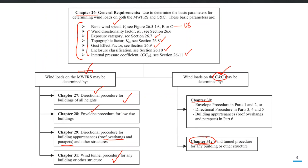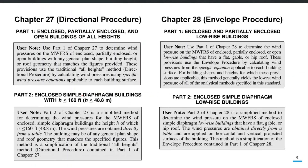We will mainly focus on the directional procedure for general buildings of all heights in Chapter 27. Chapter 27 has two parts: Part 1 prescribes the wind design procedure for enclosed, partially enclosed, and open buildings of all heights using specific wind pressure equations applicable to each building surface. Part 2 is a simplified procedure applicable to low-rise simple diaphragm buildings with height less than 160 feet, where wind pressures are obtained directly from a table.